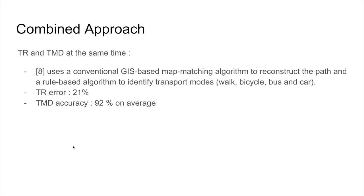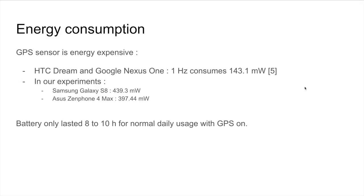So far, we've seen multiple approaches to tackle trip reconstruction and transport mode detection that are based on the GPS sensor of mobiles. One thing to know, though, is that the GPS sensor is actually quite energy expensive. By running our own tests, we've discovered that using a Samsung Galaxy S8, its battery will only last from 8 to 10 hours on normal daily usage with the GPS on.